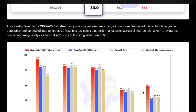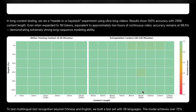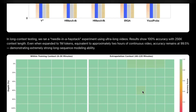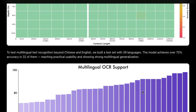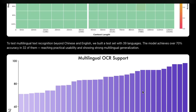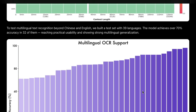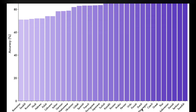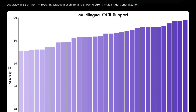The model is doing a pretty good job including with longer context, which is up to 256,000 context length. The model also has multilingual OCR support, covering 39 languages in the test dataset, including Indian languages like Hindi, Arabic, and Urdu — not Romanized scripts, but the model has understanding of the native scripts themselves.